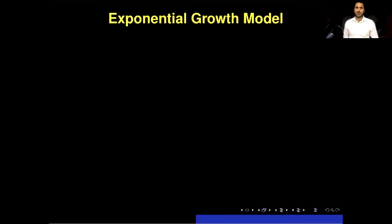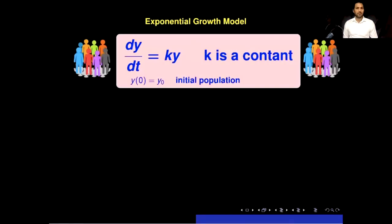Now let's first talk about the exponential growth model. In this model, the population grows over time as a result of the number of individuals available to reproduce, without regard to resource limits. The exponential growth model can be formulated mathematically by the differential equation dy/dt = ky. Here y represents the number of individuals present in the society at a given time, k is a constant representing the rate of increase, and y₀ is the initial population.